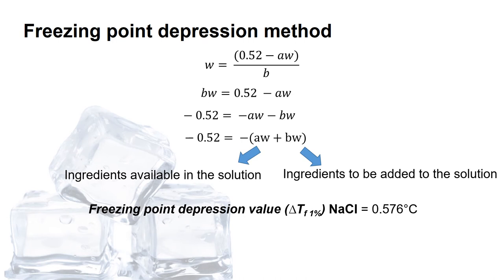Freezing point depression value for sodium chloride is 0.576. This means that 1% of sodium chloride solution will depress the solution's freezing point by 0.576 degrees Celsius. If you have 2% of sodium chloride solution, then the depression will be double. And this is proportional as we go with the increasing of the concentration of the solute.